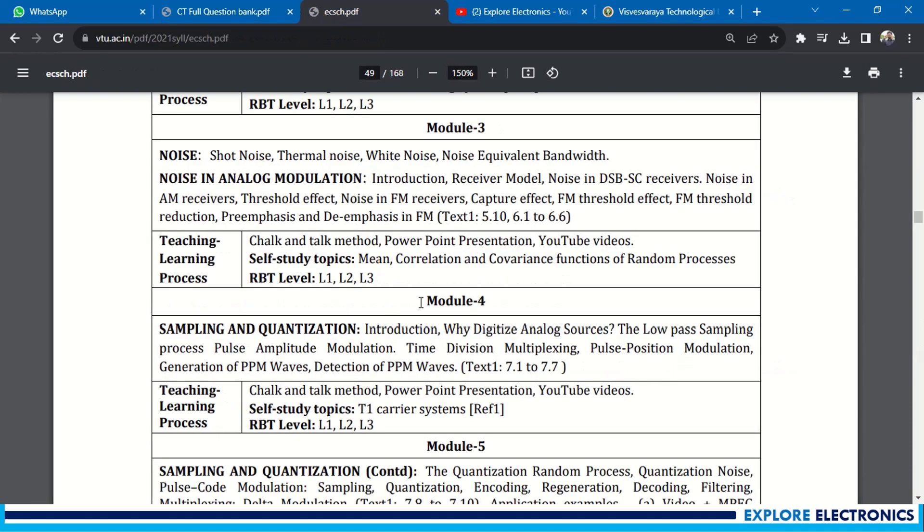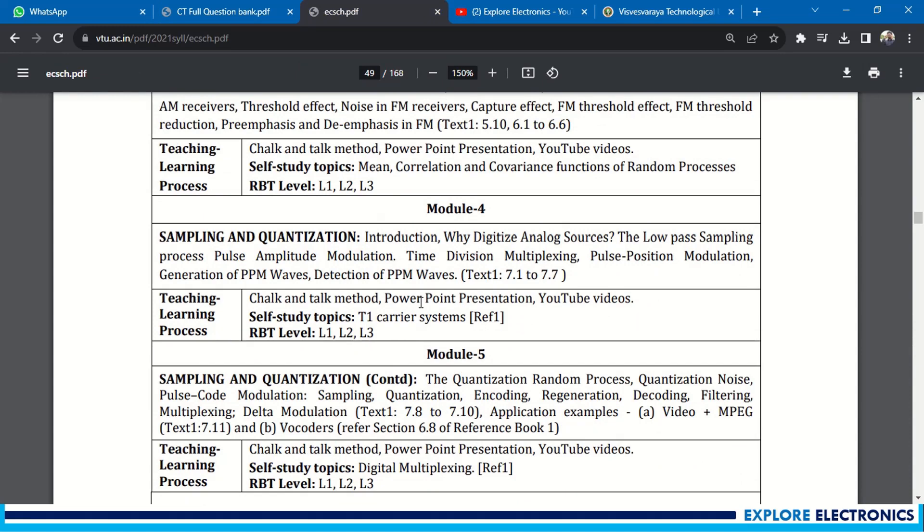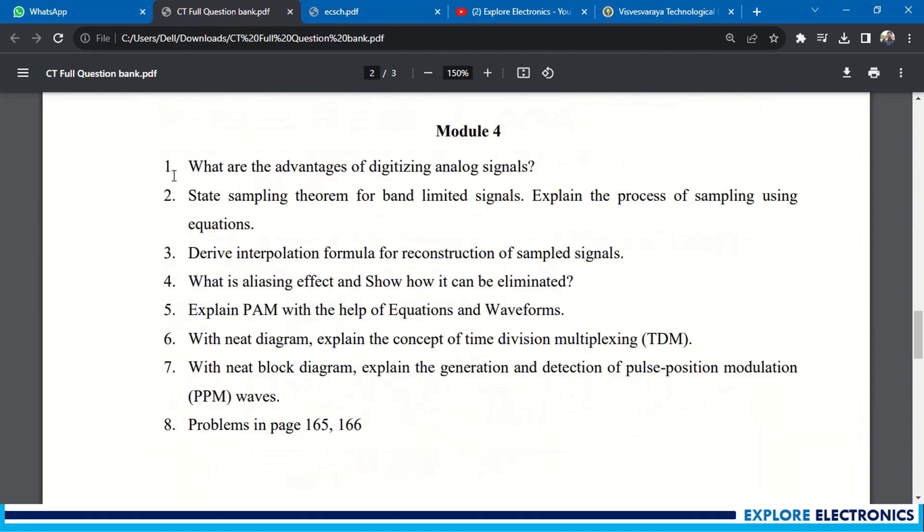Module 4 is sampling and quantization. In sampling and quantization, you can see advantages of digitizing the analog signals - why we want to digitize. State the sampling theorem for band limited signals. Explain the process of sampling using equations. This question you can expect.